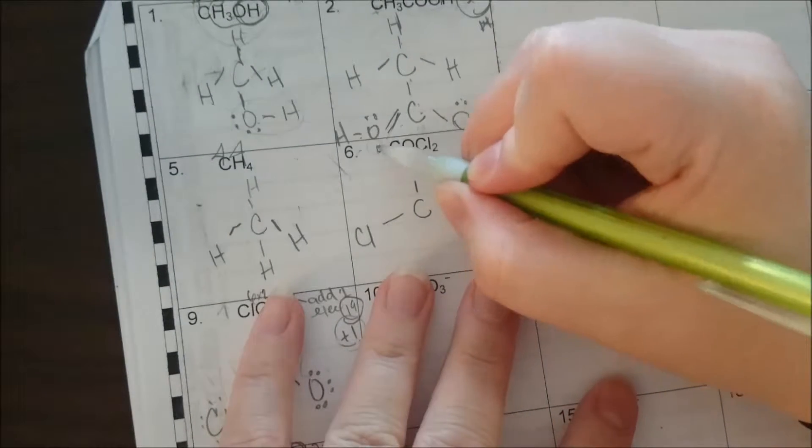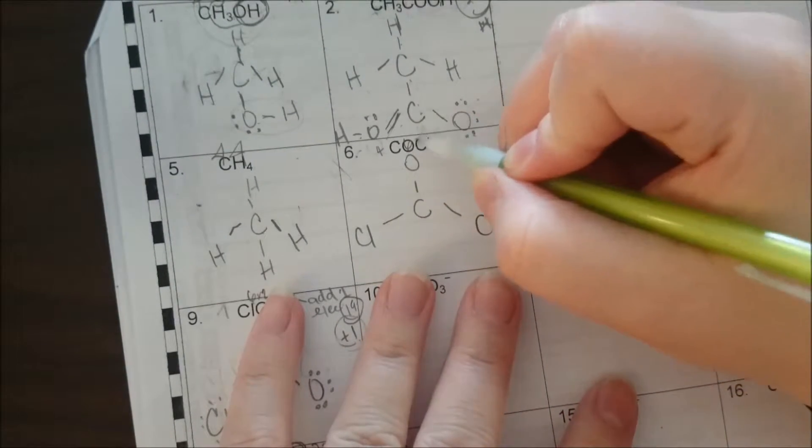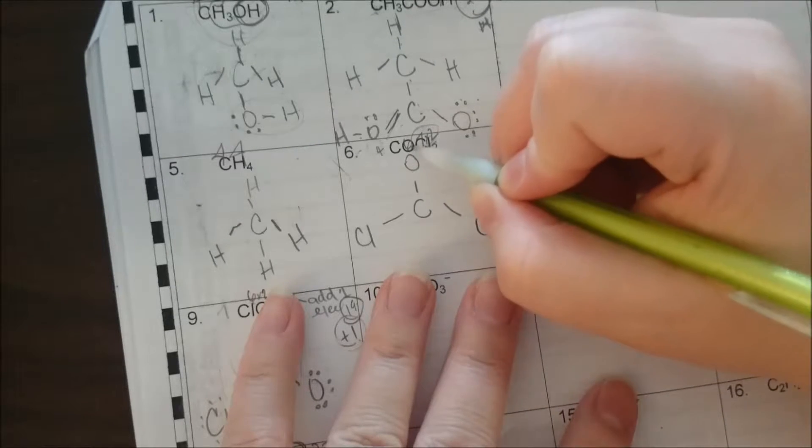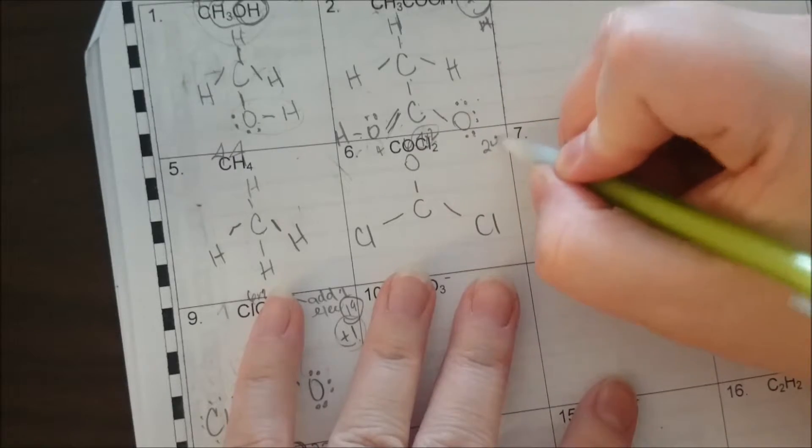So for our electrons, we have four here, six here, seven times two here. So we have 14 plus six is 20, and then four. So 24.